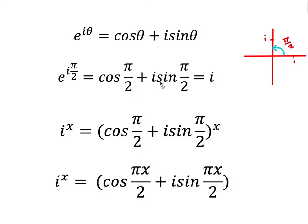So I've rewritten i as cos(π/2) plus i sine(π/2). Therefore if I'm doing i to the power x, I've got cos(π/2) plus i sine(π/2) to the power x. I then use de Moivre's theorem — if I've got some complex number to the power x, I can bring the x inside the angle — so this to the power x is exactly the same as cos(πx/2) plus i sine(πx/2). All I've done is rewrite i to the x in terms of cosine and imaginary sine.